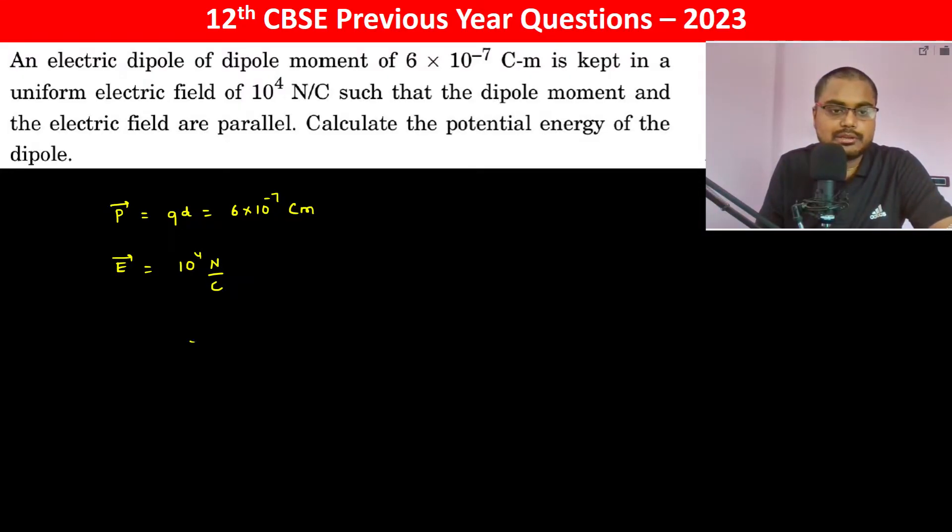Take the electric field in this direction and our small dipole like this. This is the electric field and this is our dipole.